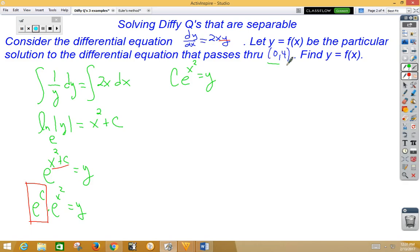Well, now we can plug in our (0,4) and solve for c. So we get C times e to the 0 is equal to 4. So C is 4. Plug our 4 back in, and we get y is equal to 4e to the x squared.